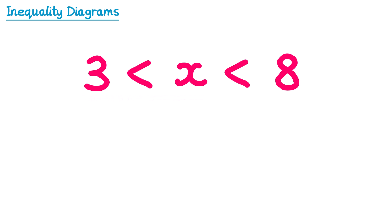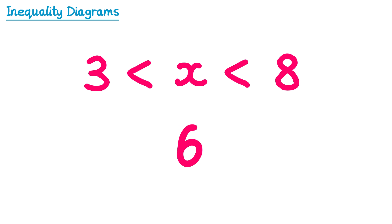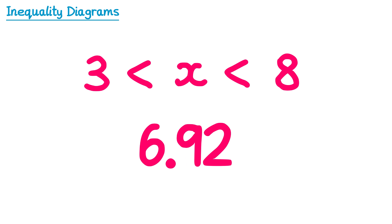So we want numbers where x is less than 8 but greater than 3, which basically means x is in between 8 and 3. For example, 4, 5, 6, or 7. And once again we don't rule out decimals — you could have 6.92, for example. You wouldn't be allowed to include the number 3 or 8, because these symbols say less than and not less than or equal to.